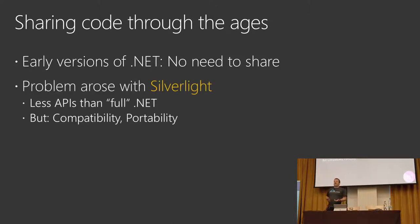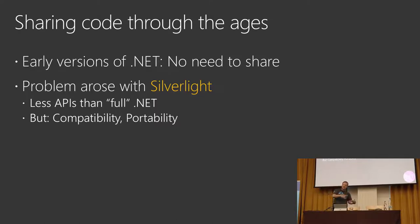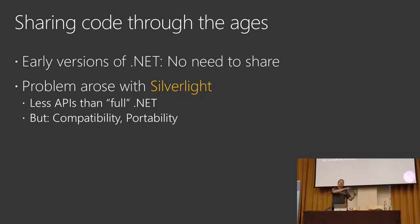But then came Silverlight, which came out around 2007–2008. Suddenly we had another implementation of .NET — a smaller version with fewer APIs than in WPF (Windows Presentation Foundation). And it was even worse than that, because not only did you have fewer APIs, but sometimes you had more APIs, because they were adding stuff to Silverlight before adding it to full-blown .NET. The reason was that full-blown .NET was released about once a year, while Silverlight was released much more often, so they could add features faster.